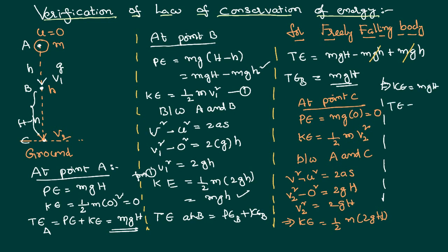Total energy at point C is potential energy plus kinetic energy. Potential energy is zero. Kinetic energy in terms of height is MGH. Therefore total energy at point C is also equal to MGH.